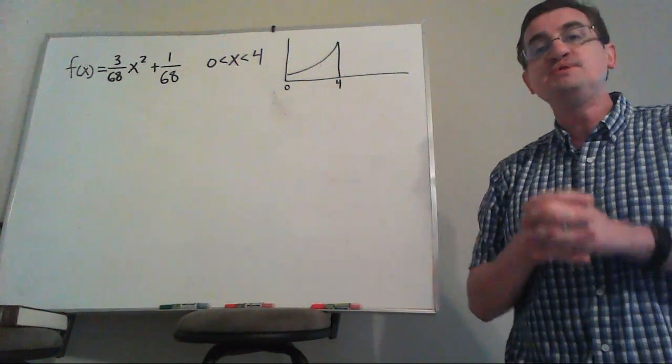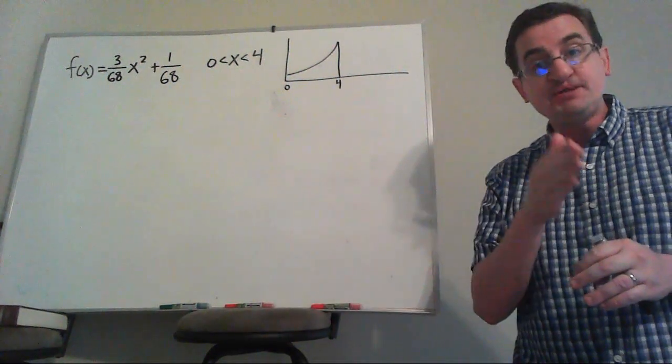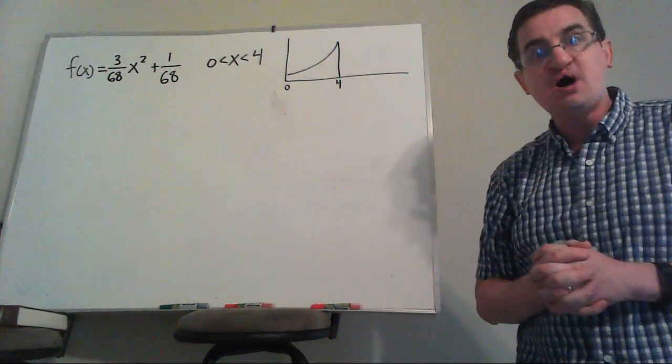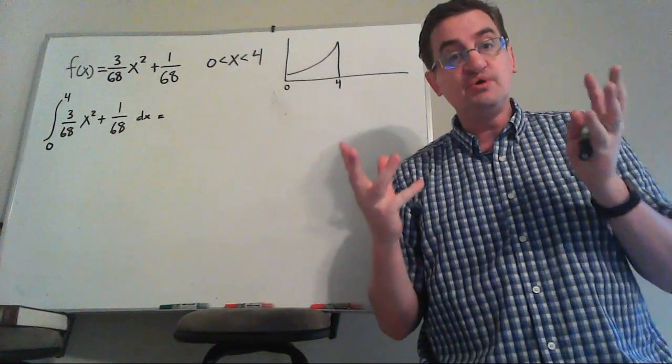I also worry about whether the full probability is 100%. Last time we added up all the x's to get 100%. How can you add up all this when there's every possible x? The answer is that's exactly what the integral is for.